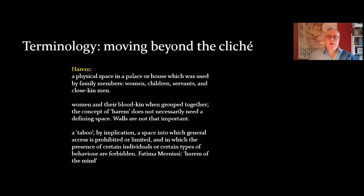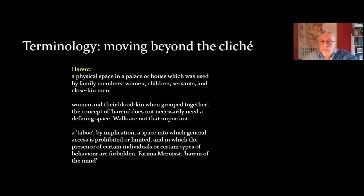Thinking about Harim then, we need to think about the terminology. What do we mean when we say Harim? I think it's a very clichéd word, and yet it's a word that we have to use in the absence of anything else. Harim, in its true understanding, can be a physical space in which a household, especially the family members, were housed — women, children, servants, close-kin men, blood relations. It's kind of the inner sanctum of a house or a palace. It can also refer to this group of people together, so blood-kin when grouped together are a Harim, and therefore a Harim doesn't necessarily need defining walls.